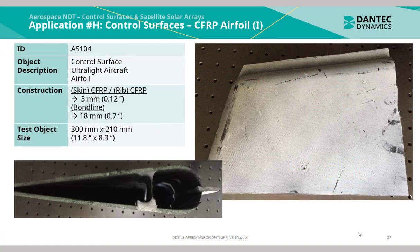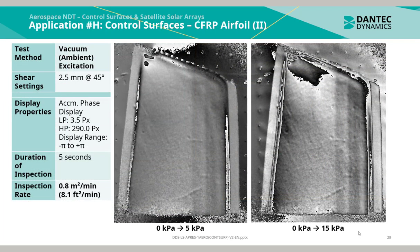The following application is of a carbon fibre reinforced plastic airfoil. Using vacuum ambient excitation, the left image is acquired using a pressure jump of 5 kPa and the right at 15 kPa. Notice in the top left hand corner there is localised disbonding, and there are also some indications along the bond line that the bond line is incomplete. The duration of both inspections took 5 seconds, yielding an inspection rate of 0.8 m² per minute.